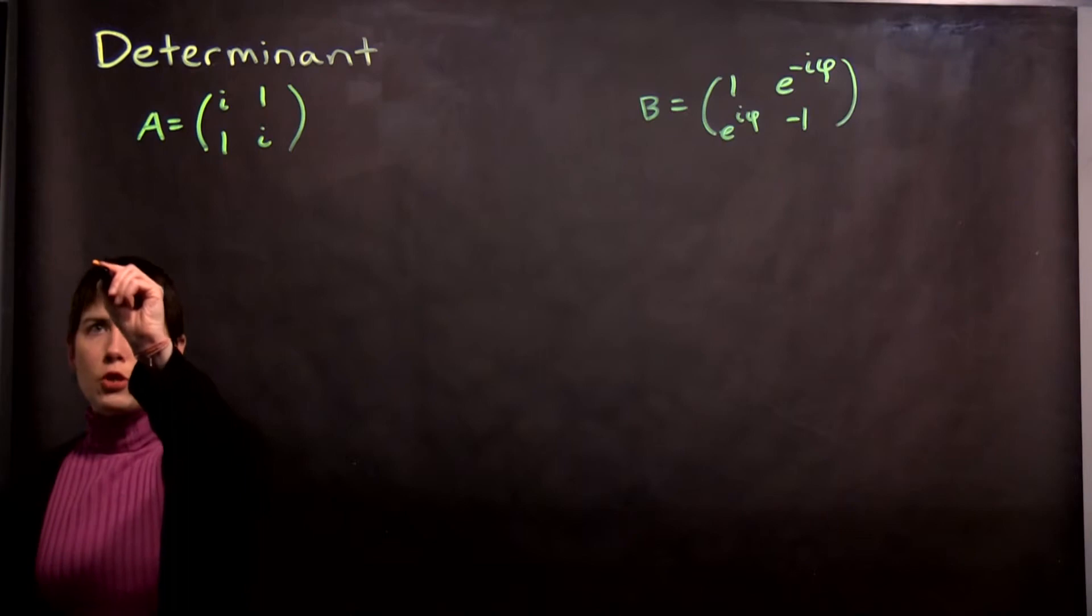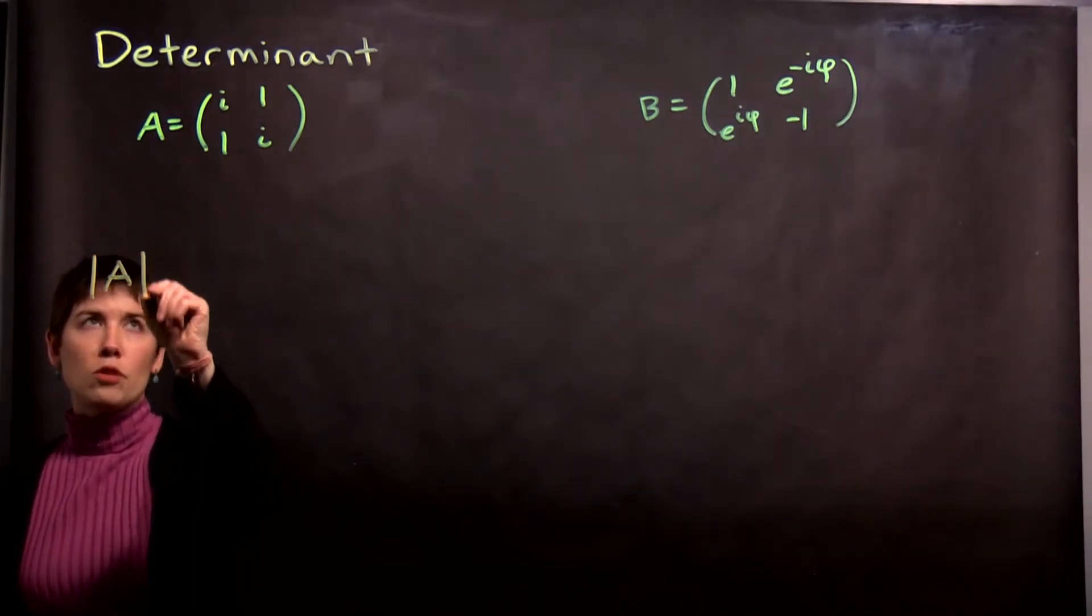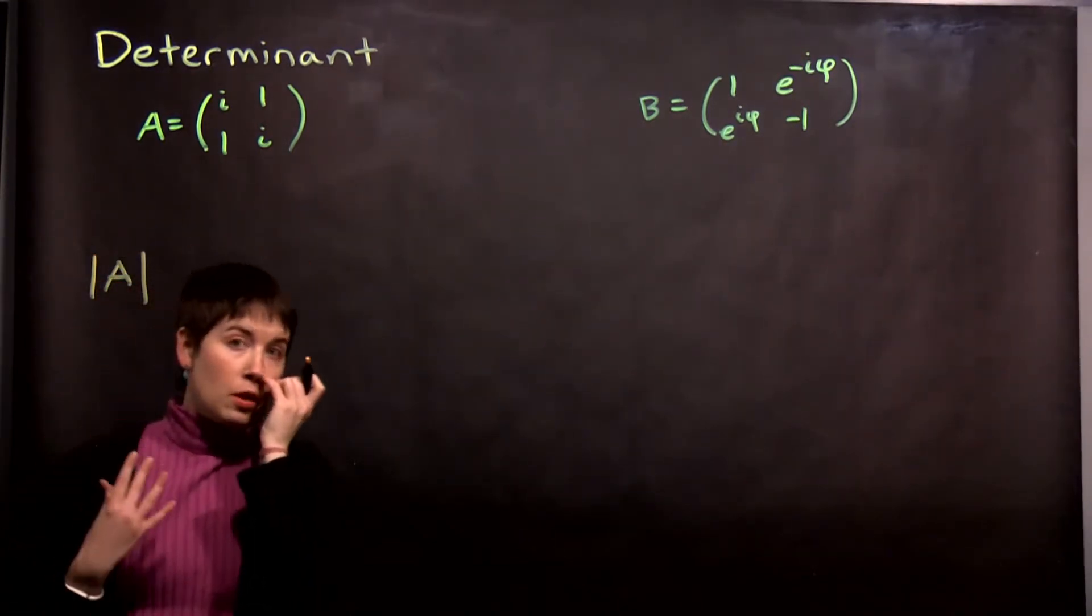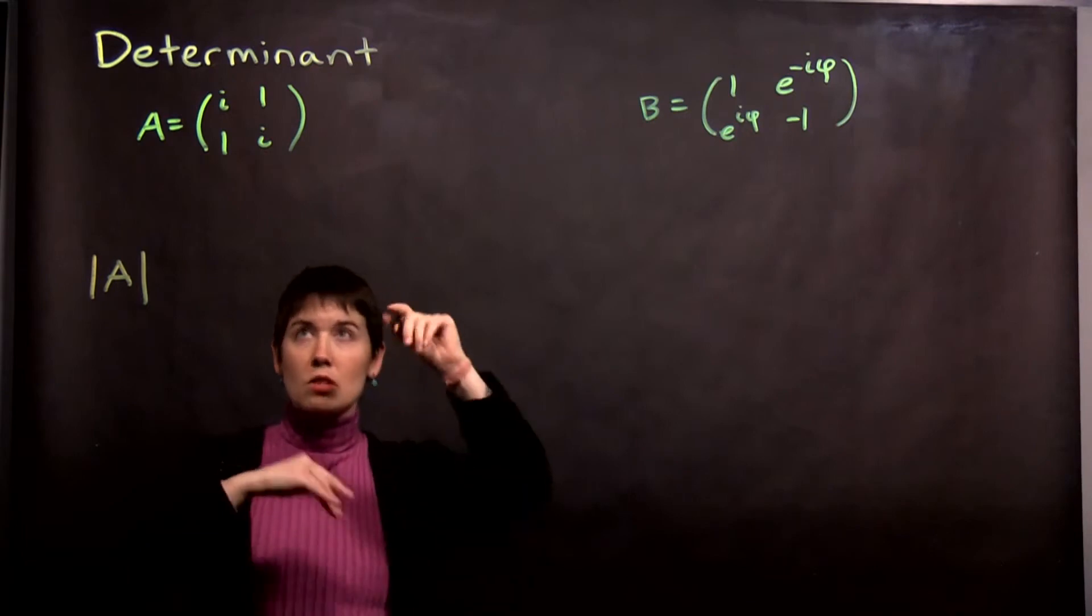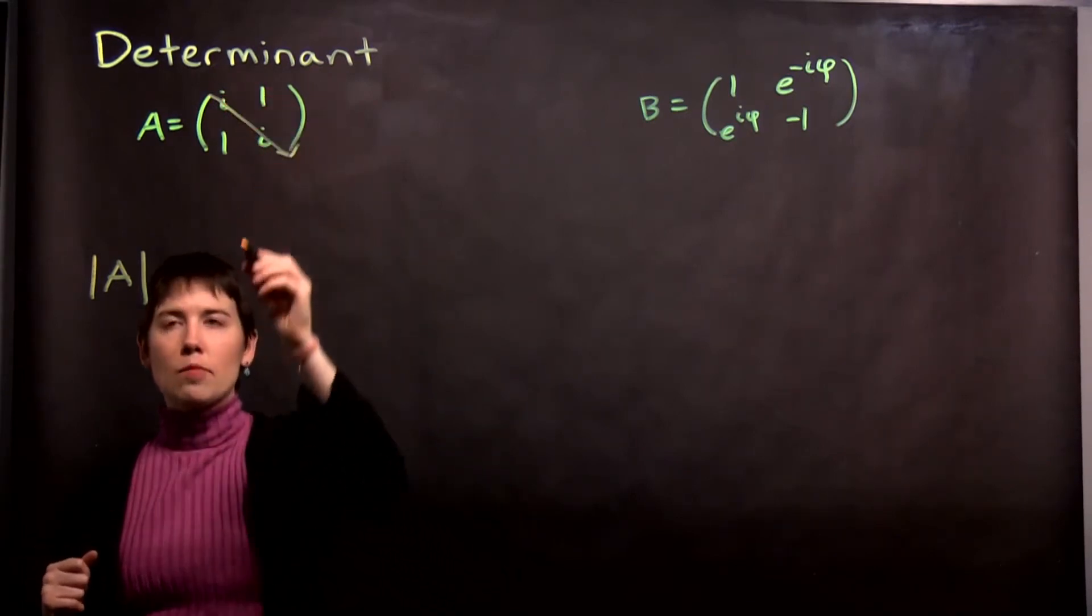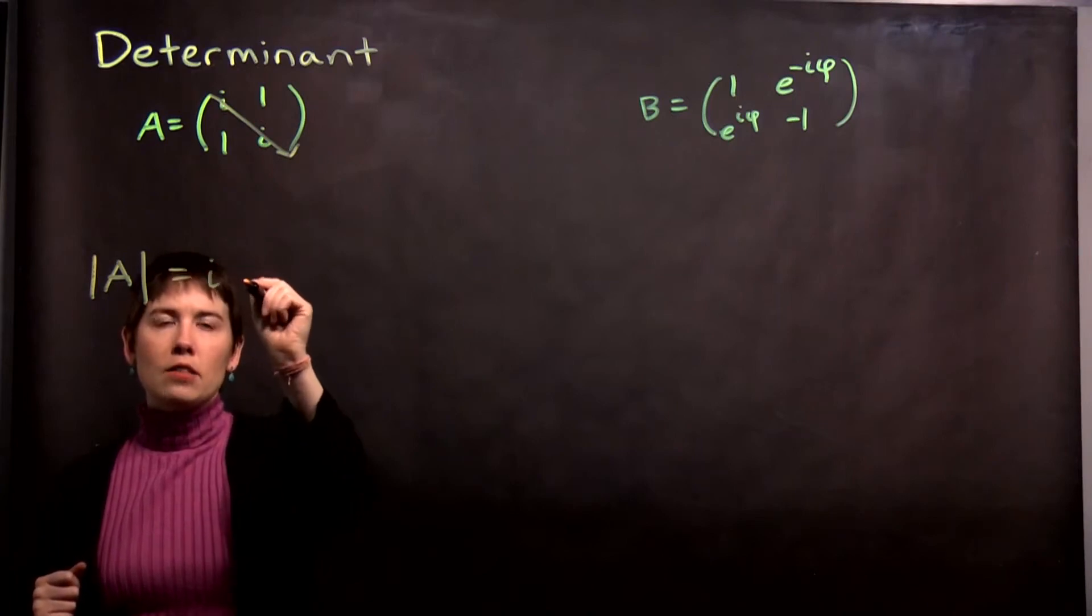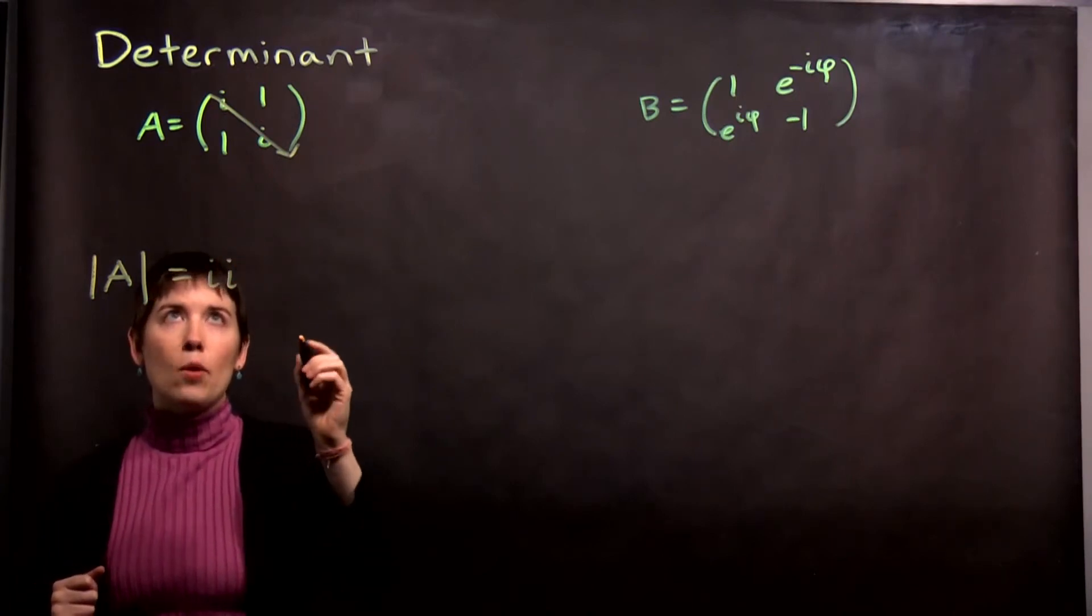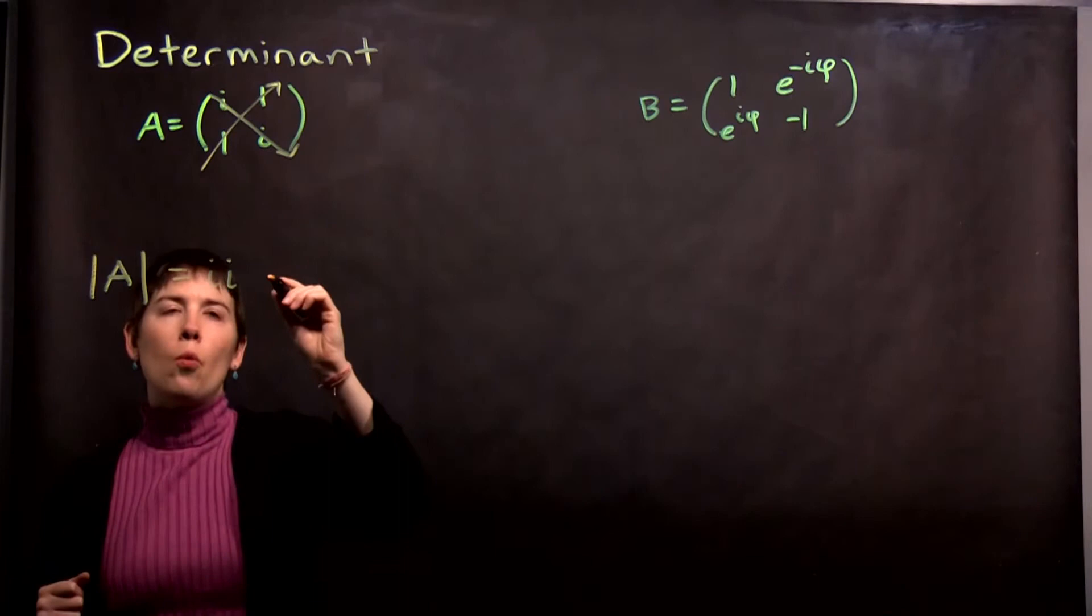So if I want to find the determinant of A, which I've written up here, again the method I'm using is the down diagonal minus the up diagonal. So that down diagonal was i times i. So i times i, and I can write it that way,